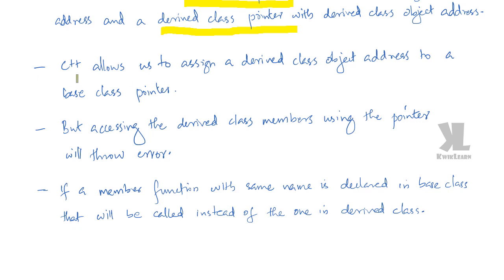C++ allows us to assign a derived class object address to a base class pointer. We can assign the pointer — C++ allows that. But accessing the derived class members using that pointer will throw an error.